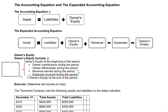Let's begin with the accounting equation. The accounting equation is: assets equals liabilities plus owner's equity. This is also the same as the balance sheet. On the balance sheet, we have our assets and then we have our liabilities and owner's equity. When we add the owner's equity to the liabilities, that should equal the assets — that is the basic accounting equation and also the format for the balance sheet.